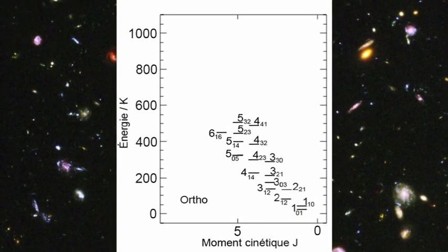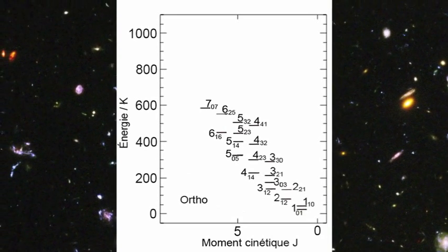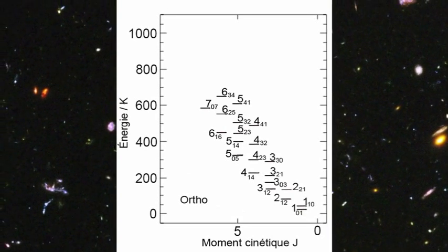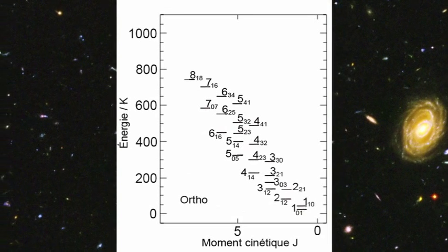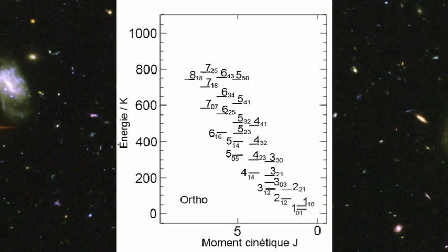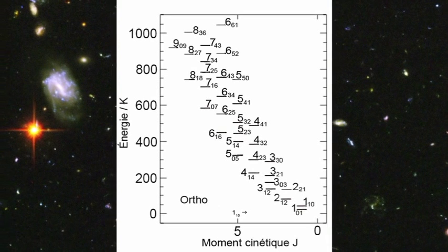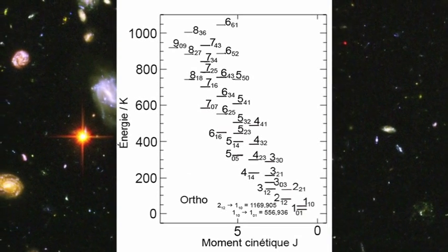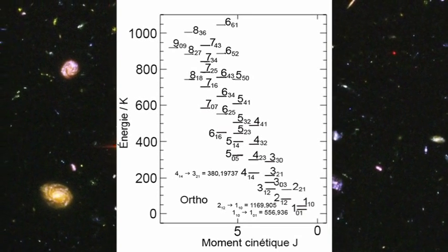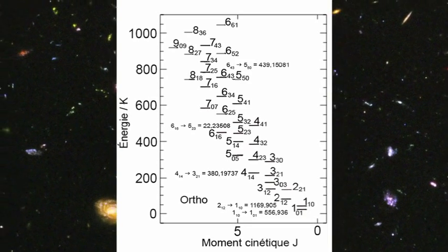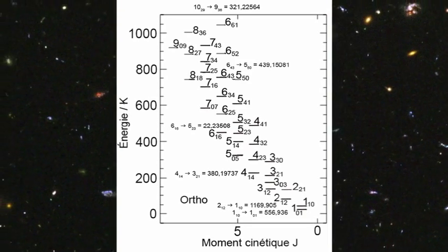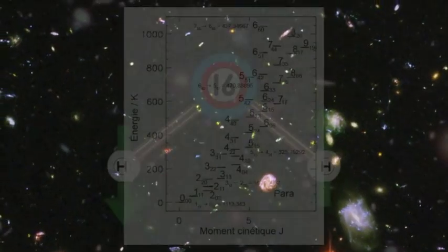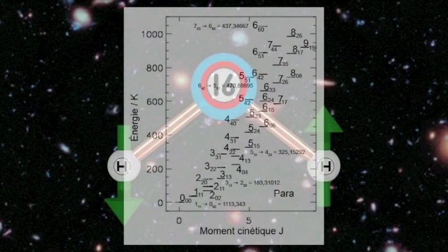The higher the temperature, the higher the angular momentum J, and the faster the spinning of ortho-water around its center of mass. Any transition between two energy levels of ortho-water corresponds to a characteristic frequency, disclosing existence of ortho-water somewhere in the universe.